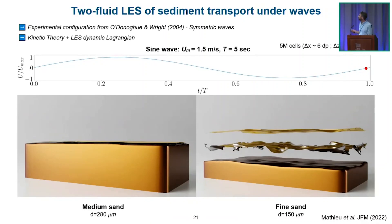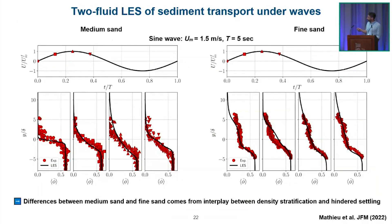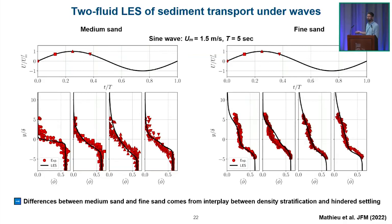Using LES, we can explain what's happening. Comparison of concentration profiles at different wave phases for medium and fine sand shows that experiments observe a flat concentration profile for fine sand. With fine sand, so much sand is set in suspension that density stratification kills turbulence — full damping. The flow becomes laminar, then sediment wants to settle back but hindered settling creates a non-linear process, generating a very sharp interface. At this interface, Kelvin-Helmholtz shear instabilities remix the whole suspension.